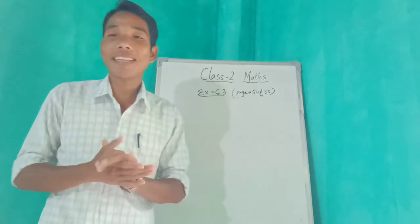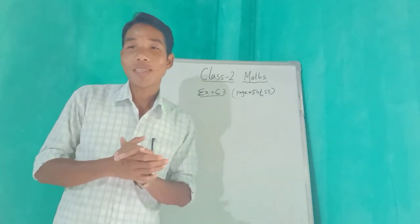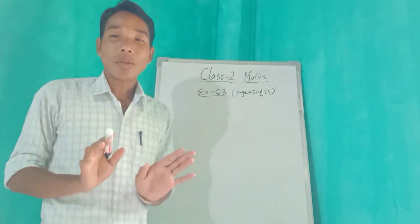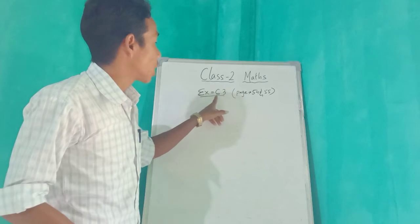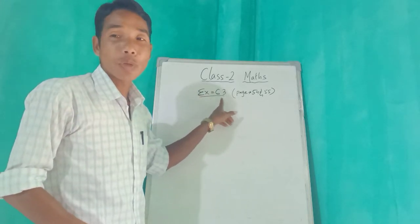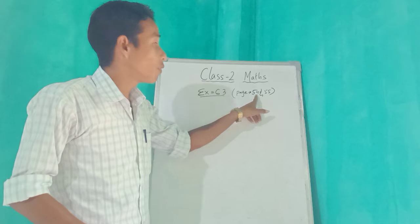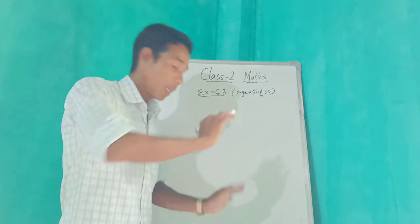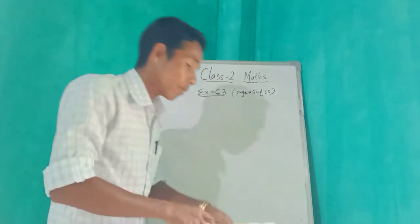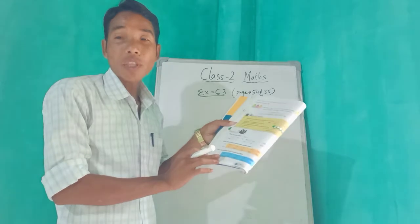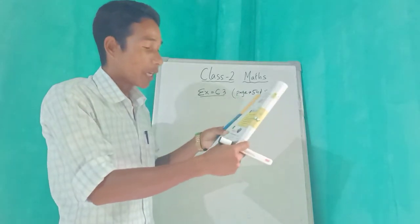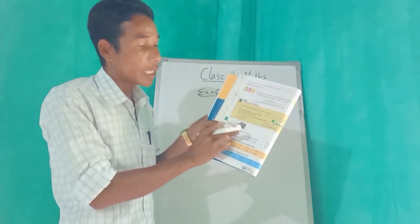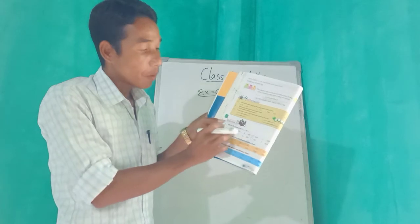Good morning class 2, how are you? Fine, okay. Please check out your math book. Today I'm going to teach Exercise 6.3, page number 54 and 55. Have you got it? Look here on the whiteboard. Page number 54, Exercise 6.3, number 1: fill in the box with greater, smaller, or equal. The box is already given here.